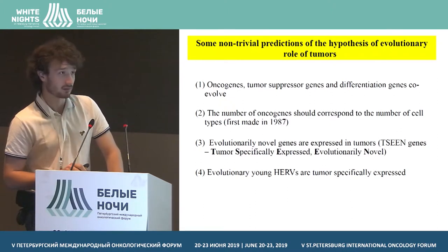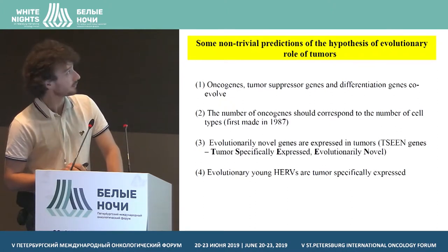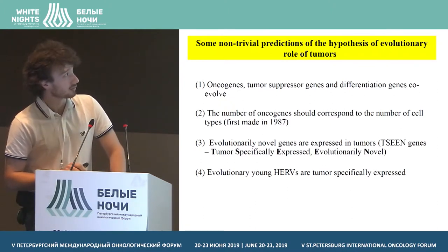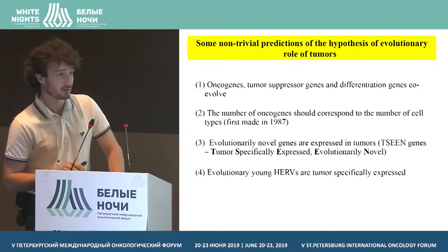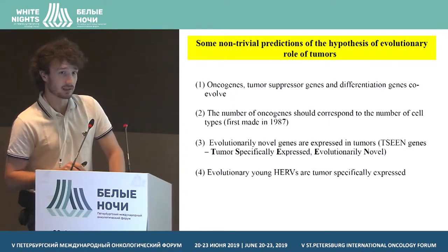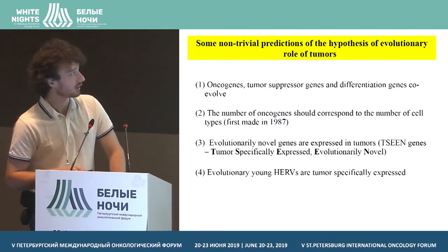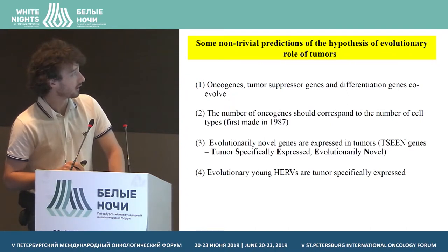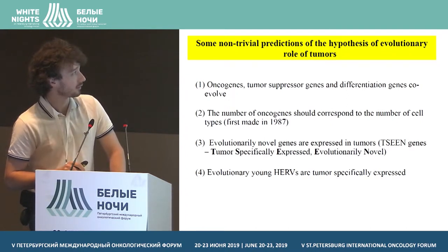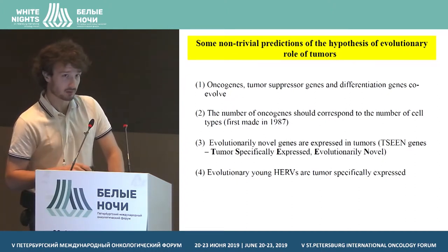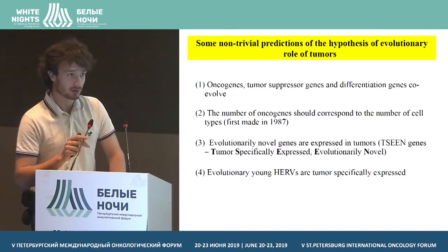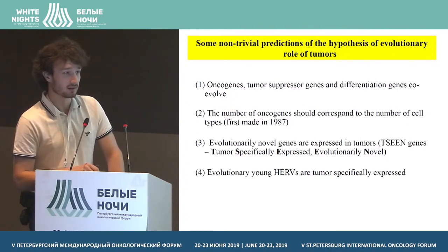The number of oncogenes has to correspond to the number of cell types. Number three: evolutionary novel genes are expressed in tumors — we call them TZIN genes. And number four: evolutionarily young ERVs are tumor-specifically expressed.